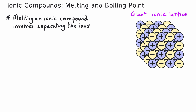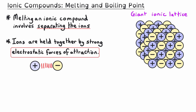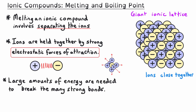Melting an ionic compound involves separating the ions away from their neighboring ions in the three-dimensional giant ionic lattice. Remember that the ions are held together by strong electrostatic forces of attraction, and these forces are present whether a compound is a solid or a liquid. As a solid, these attractions are particularly strong because the particles are especially close. These electrostatic attractions act in all dimensions, so each negative ion will have six positively charged neighbors. There are billions and billions of oppositely charged ions in this three-dimensional ionic lattice, so large amounts of energy are needed to break the many strong ionic bonds and separate out those ions.